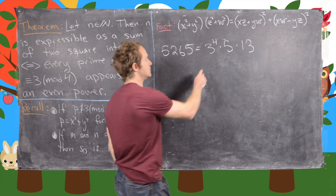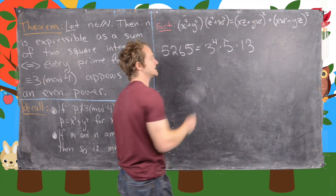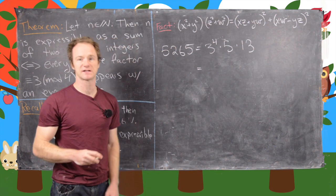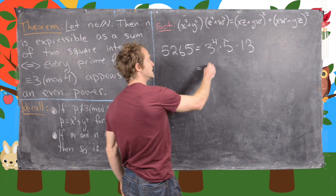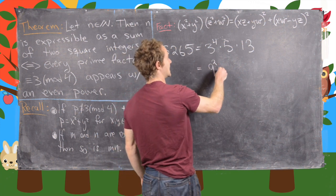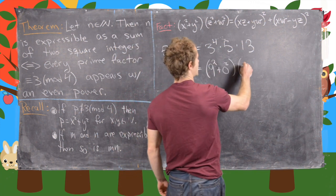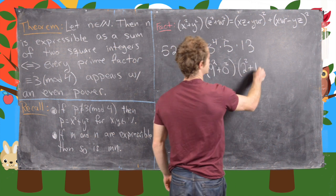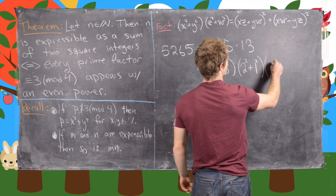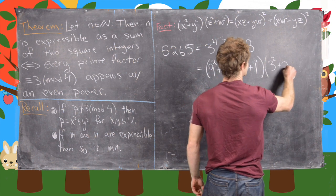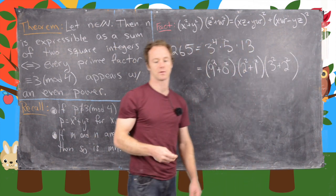So now what we can do is rewrite each of these as sums of squares and then use this formula a couple times in a row. So notice we can write this as 9 squared plus 0 squared. Here we have 2 squared plus 1 squared. And now this one is 3 squared plus 2 squared. 9 plus 4 is 13.